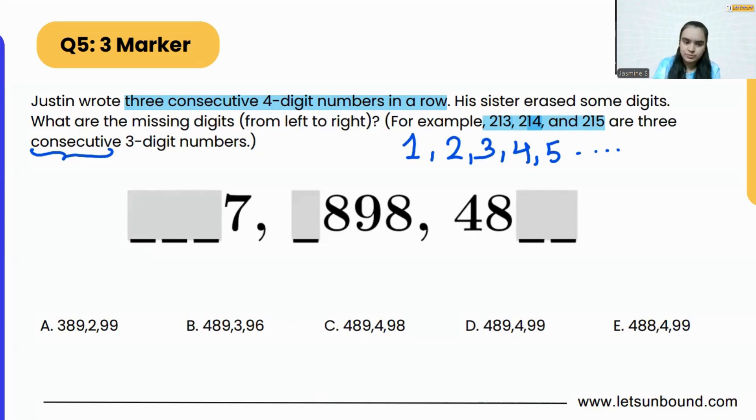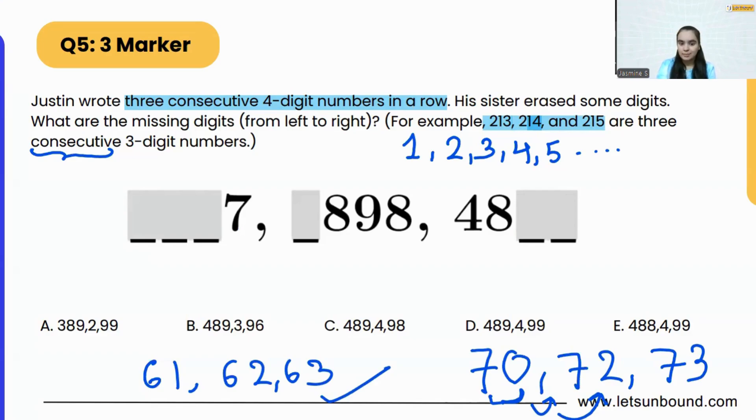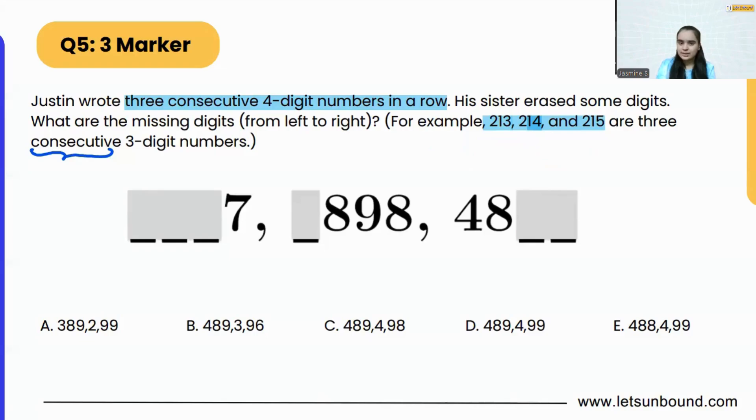So if I ask you, are these consecutive numbers? Yes, they are, because they are one after another. They are in a row. But what if I ask you, are these consecutive numbers? No, they aren't, because after 70 we have 71 and then 72. So they are not in a row. They are skipping a number in between, so they are not consecutive.